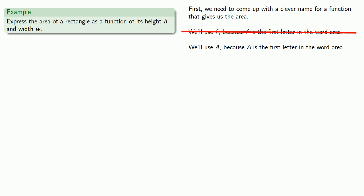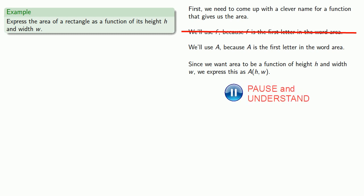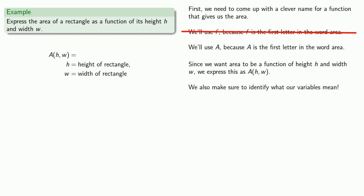More importantly, since we want area to be a function of height and width, we have to express this as A of h, w, where our notation says that our area is going to be somehow related to h and w. So what we'll want to do is we want to make sure to identify what our variables mean. So we have our function, A of h, w, h is the height of the rectangle, and w is the width of the rectangle.